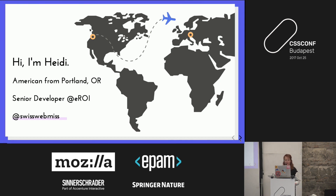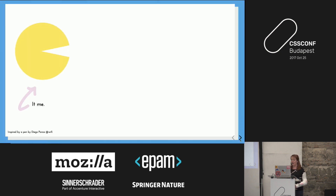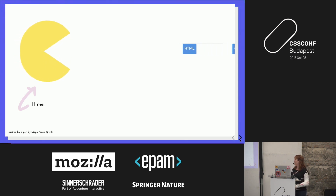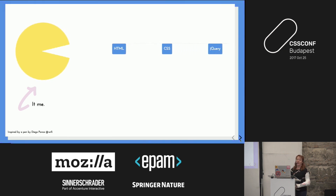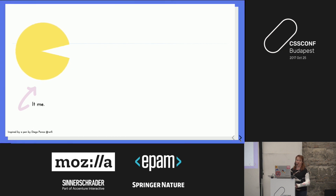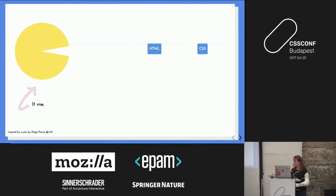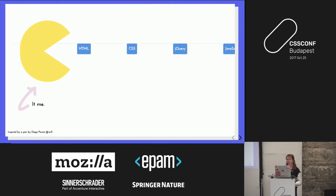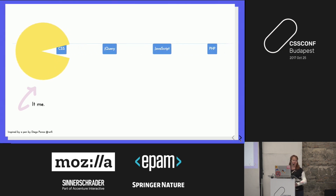I've been a developer about nine or ten years. When I first got into development I was so excited to learn everything. First I learned HTML and CSS, then I saw other websites had cool slideshows using jQuery, so I wanted to learn jQuery. But I realized I didn't understand how jQuery worked at all, so I learned JavaScript. Then I wanted to use data in my site, so I learned PHP.